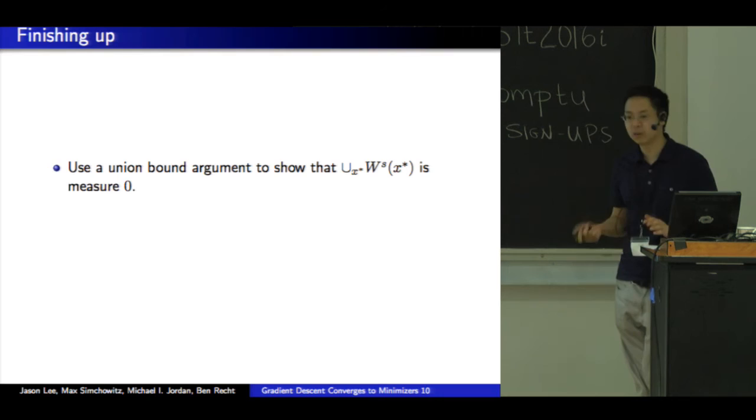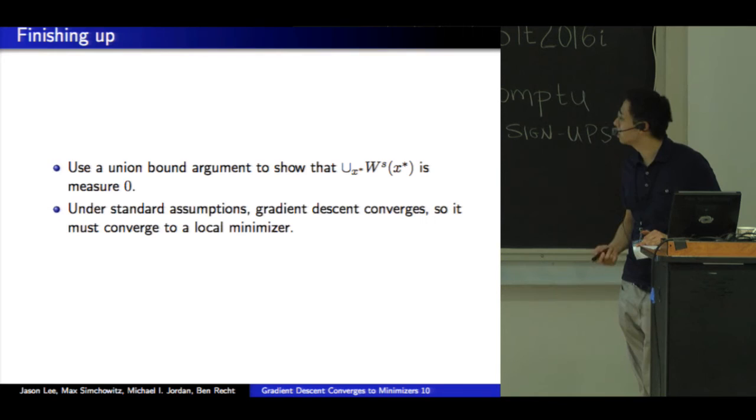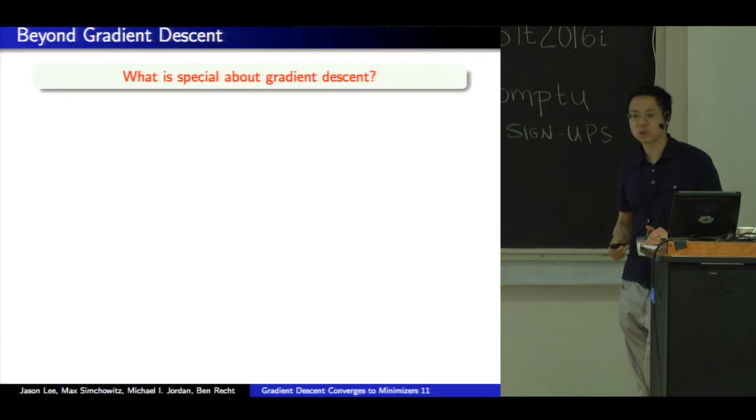So thus the global stable set of a single saddle point is measure zero. So to finish this up, we have to use a union bound or covering type argument over all critical points. And using relatively standard arguments and optimization, gradient descent actually converges. And thus it must converge to a local minimizer.